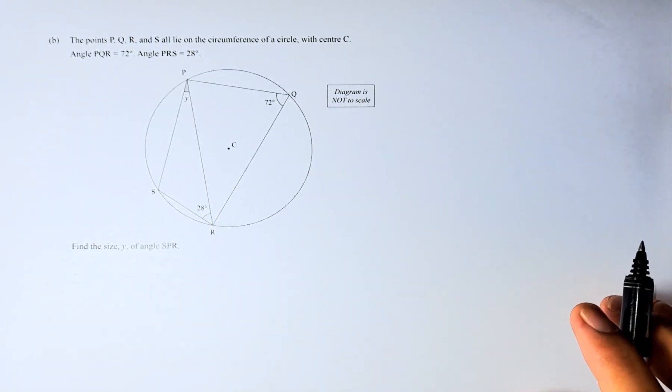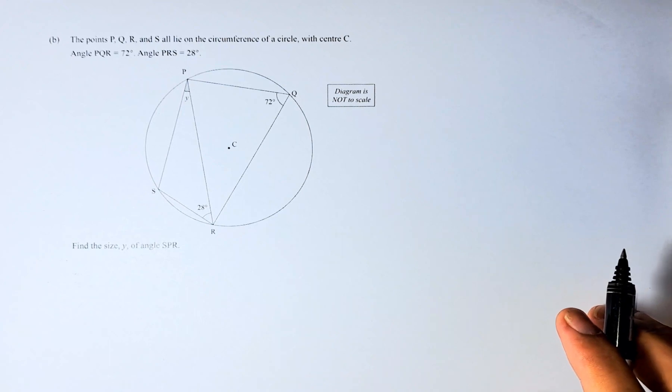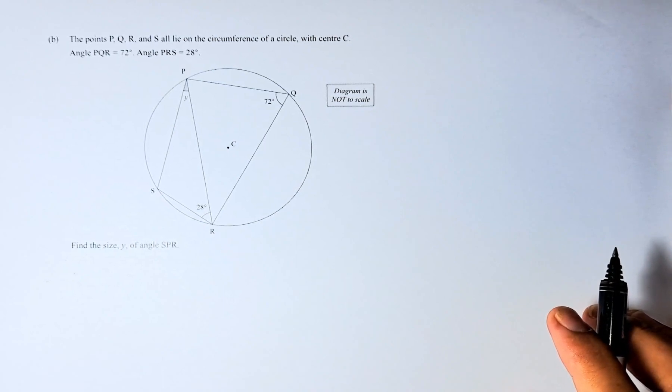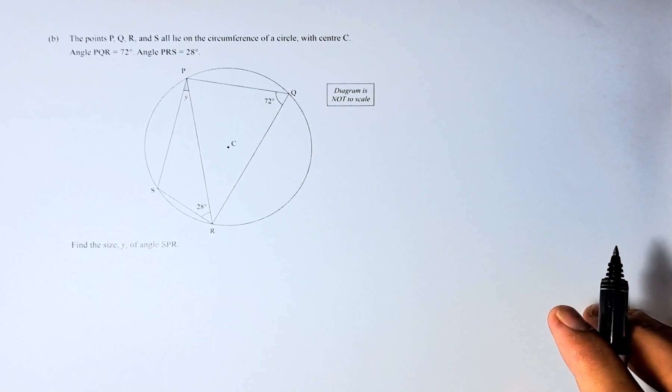Good day. This is question 2B of the 2022 NCEA Level 1 Geometric Reasoning paper. This is an achieved question and you should have no problem solving this question. Without further ado, let's read the question.